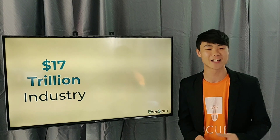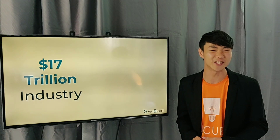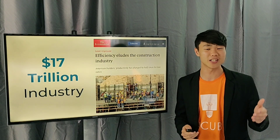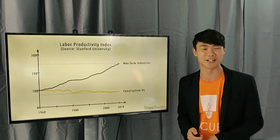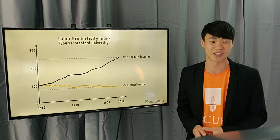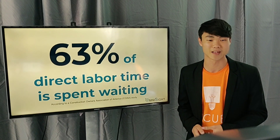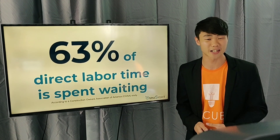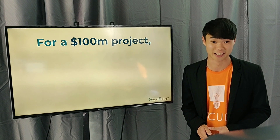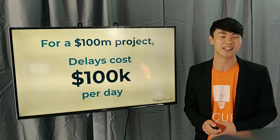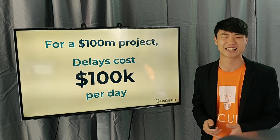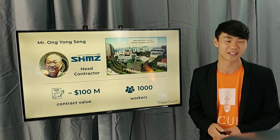OmniSight operates in the construction industry, which is worth $17 trillion. But productivity in this industry has fallen over the years, whereas everything else has doubled and tripled. Why? Because 63% of direct labour time is spent waiting. For a $100 million project, delays cost $100k a day — that's a very painful problem to have.